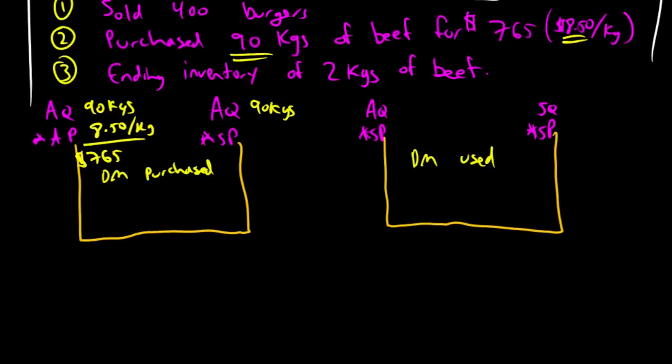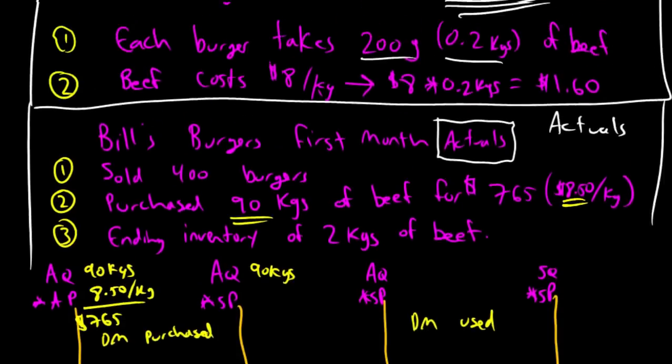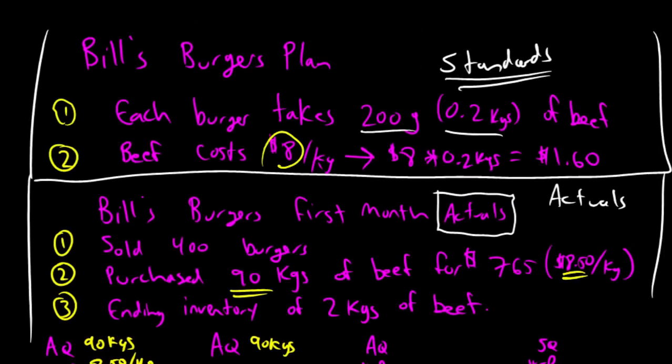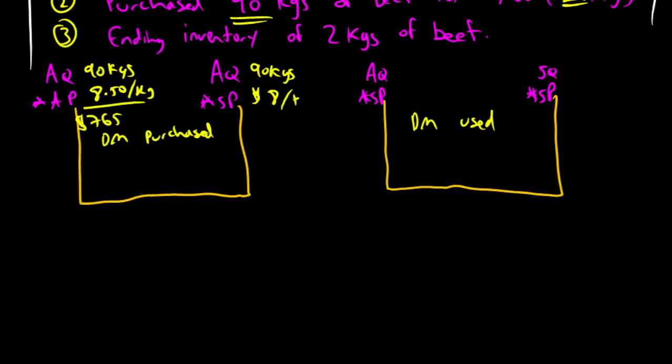90 kilograms is still my actual quantity for the right-hand prong. My standard price here, I've got to go up to my standards. Bill said, it should cost me $8 per kilogram. So, my standard price is 8. So, 90 times 8 is $720. Doing the math here, we actually spent $765. If we paid our standard price, we would have only spent $720. We're off by $45. These two numbers are $45 apart. This is a variance. Now, is this a good variance or a bad variance? But in accounting, we don't say good or bad. We say, is it favorable or unfavorable? Well, he should have paid $720 according to standards. He actually paid $765. This isn't good. He paid a little bit too much. This is an unfavorable variance. And we call this the direct materials price variance.